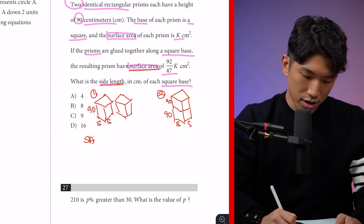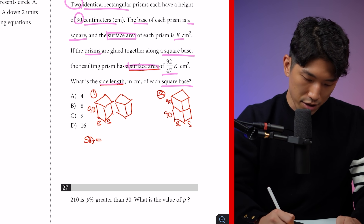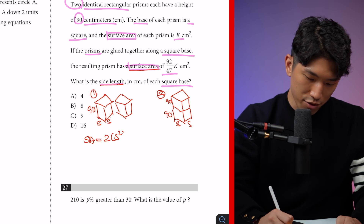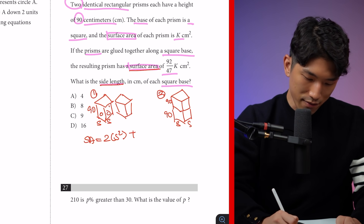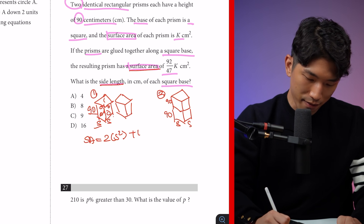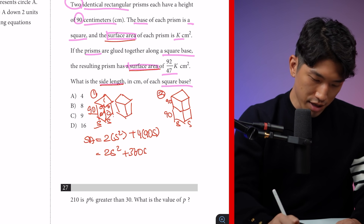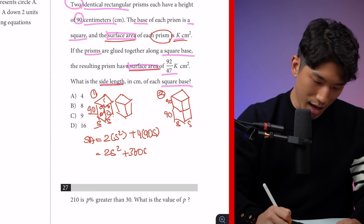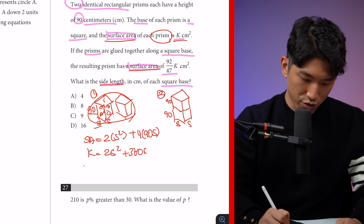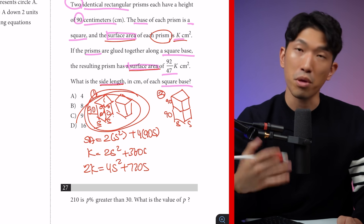The surface area of one rectangular prism consists of the top and bottom bases — each is S², so that's 2S² — plus the four side faces, each 90·S, giving 4·90·S = 360S. So the surface area of one prism is 2S² + 360S = K. For two separate prisms, the total surface area is 2K = 4S² + 720S.